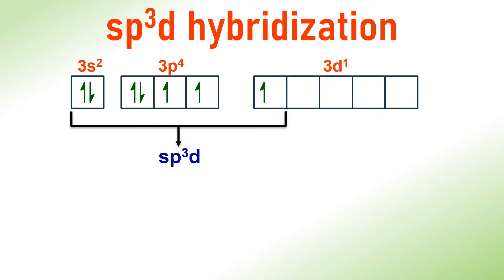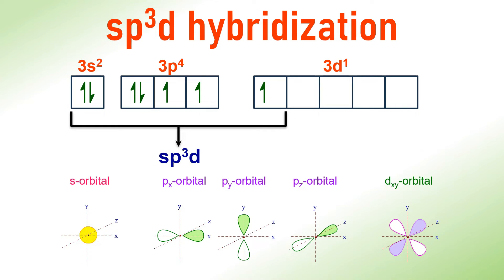But before making bonds, the Chlorine undergoes sp3d hybridization in the first excited state involving the mixing of one s orbital, three p orbitals and one d orbital.